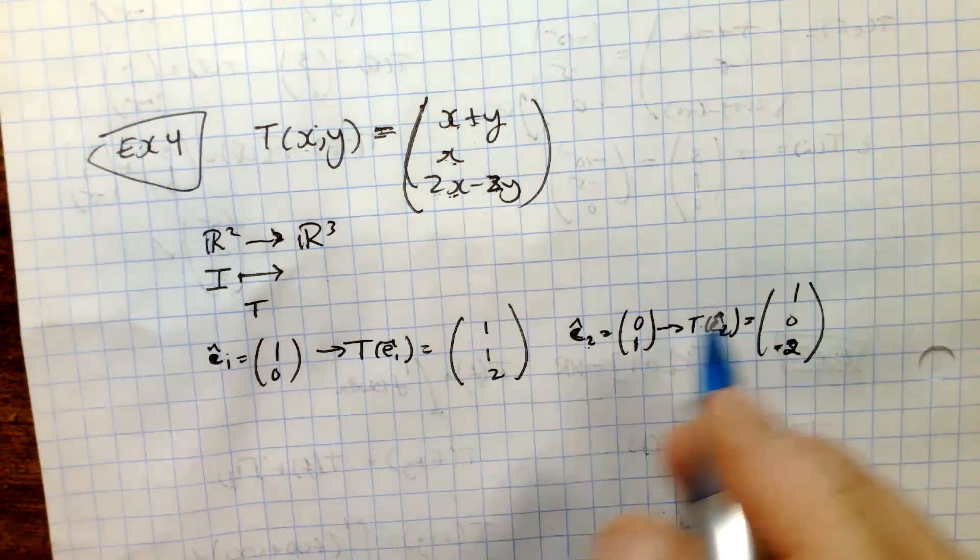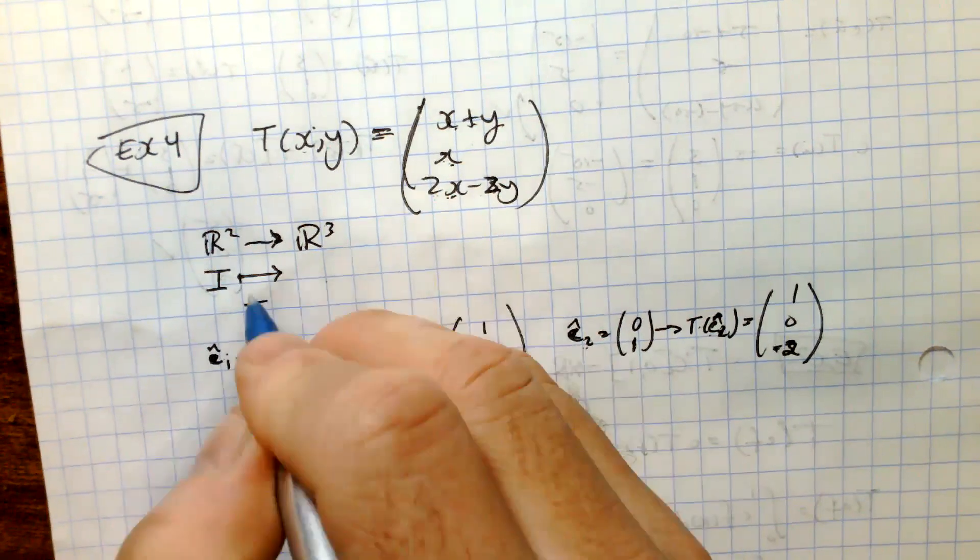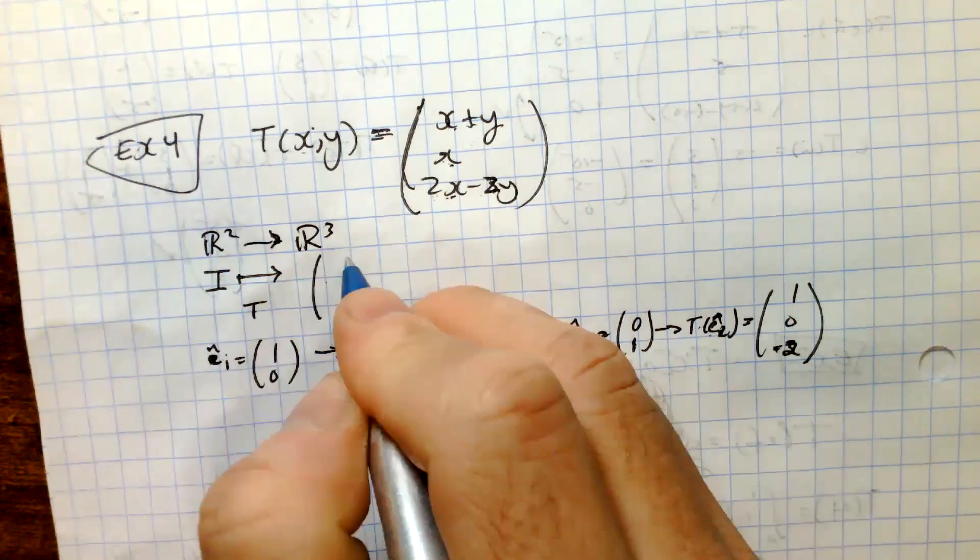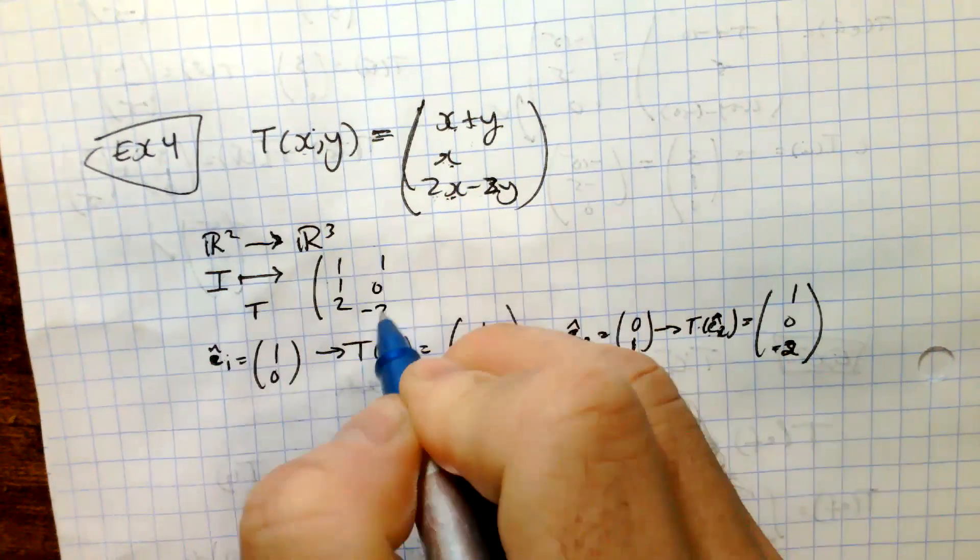So the transformation here then, or the identity, gets mapped to, under the transformation, gets mapped to 1, 1, 2, 1, 0, negative 2.